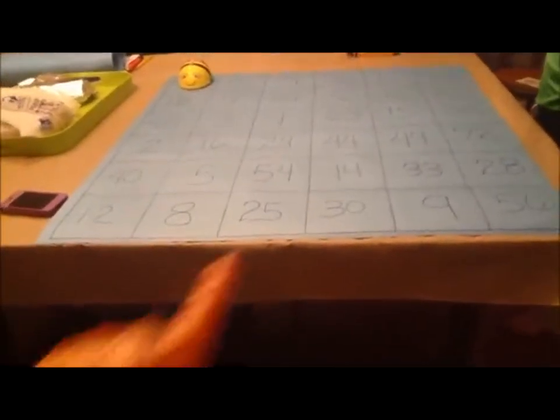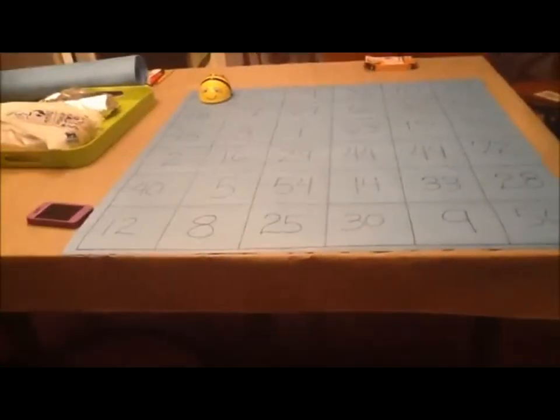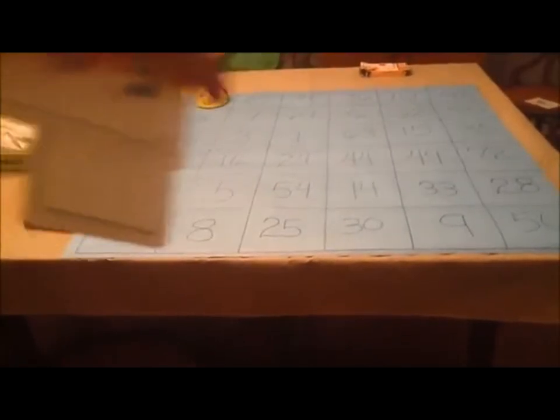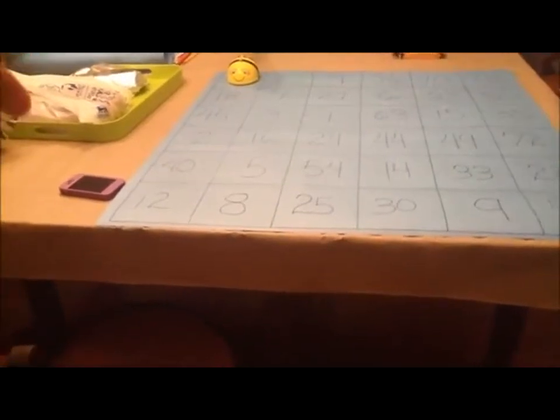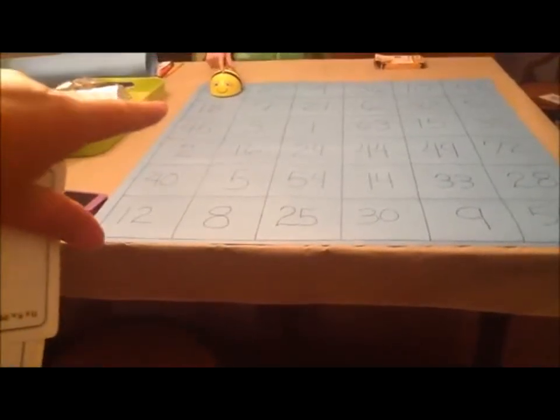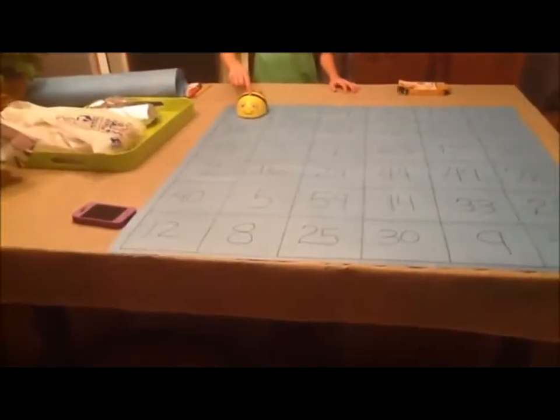Now we're going to find 30 on the mat, and I see it right here. Now we're going to have to program our BeBot to, you can do it any way you want, take any path you want to get it to come to the 30. So you could come towards me, 1, 2, 3, 4, 5, and then turn to the left, and move forward 1, 2, 3 spaces. Can you program the BeBot to do that?